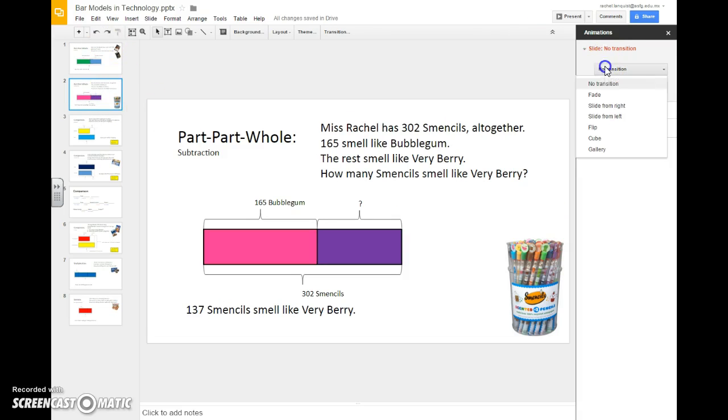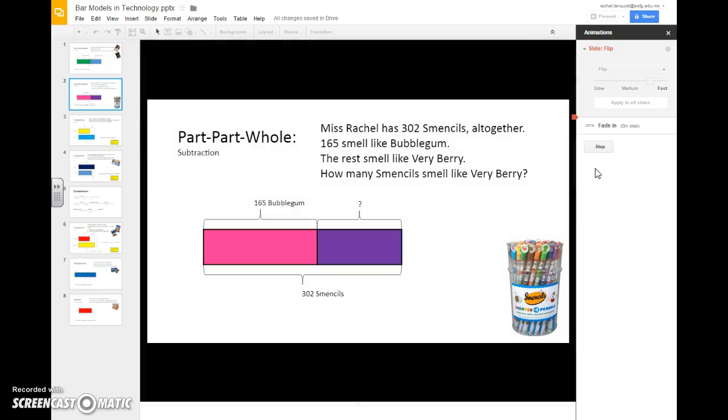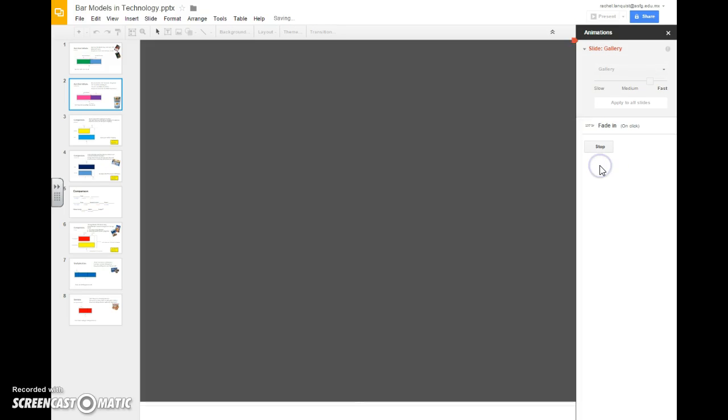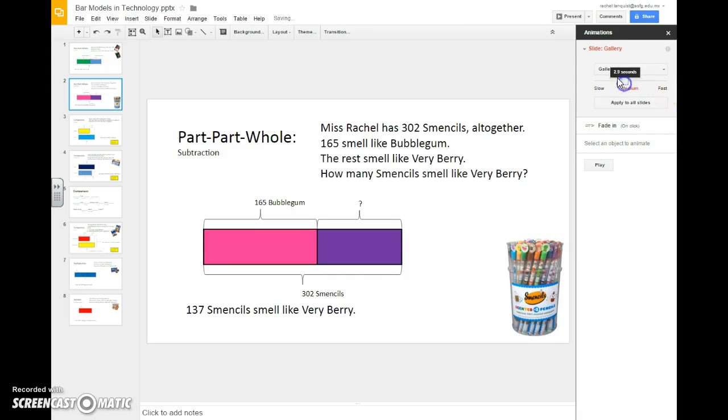If you want to have different ones for each one, I can go to my next one and then I can change it to something different. Like I can flip it, see what that means? Like it flips it, gallery, and it all depends too on how fast or slow you do something.